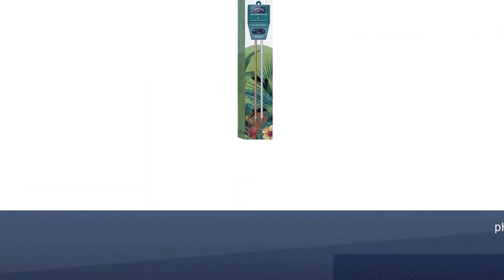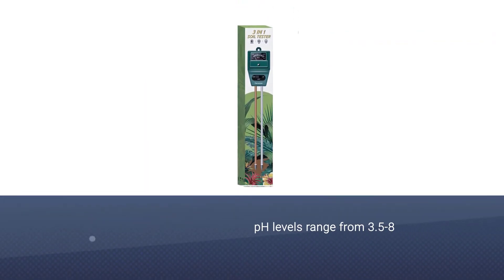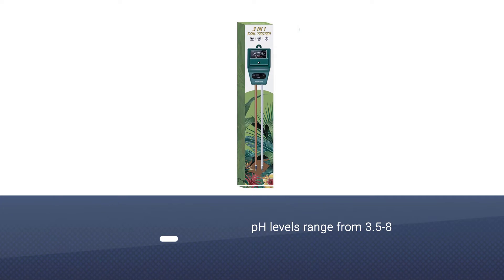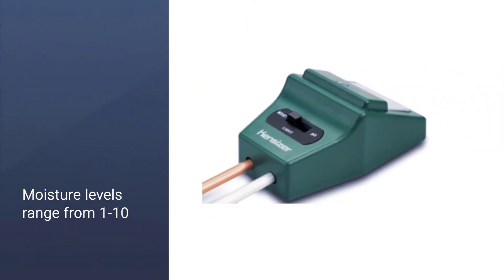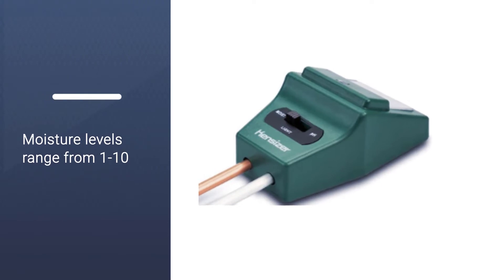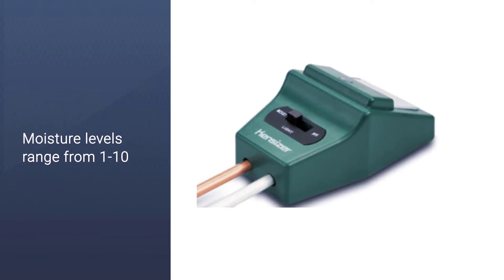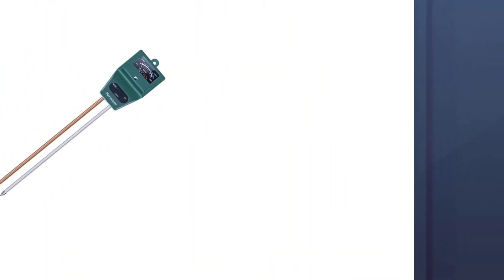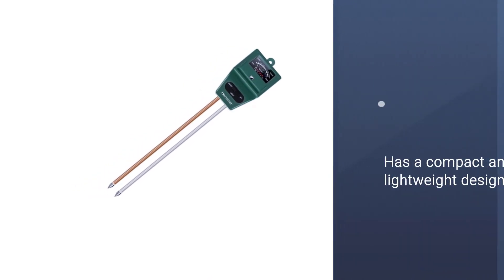The pH levels range from 3.5 to 8. Moisture levels range from 1 to 10. The Kensizer tester has a compact and lightweight design so you can easily carry it around your garden.